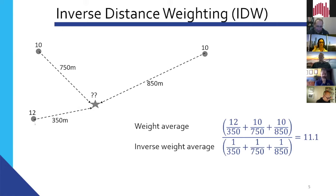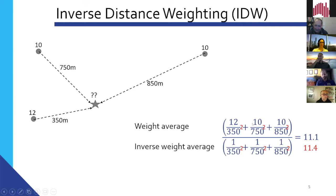So, interested in predicting the value where this star is. How inverse distance weighting works is it uses the distances between the known values as weights, and then it uses the inverse of those distances in a division sum. If we go through this example, we've got values 12, 10, 10. Value 12 is 350 metres from the unknown point. So we take 12 divided by 350, add 10 divided by 750, and add 10 divided by 850. That gets divided by the inverse of those distances. In this example, the value would be predicted at 11.1. There are variations on inverse distance — those variations basically add a power value to the distances.